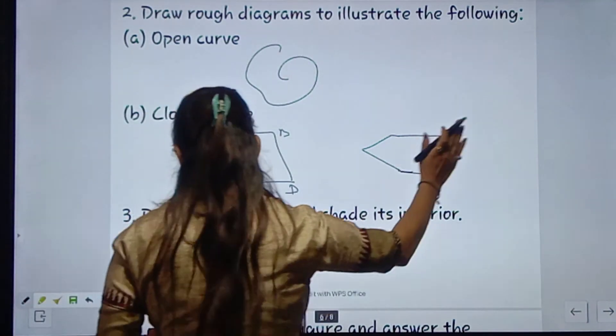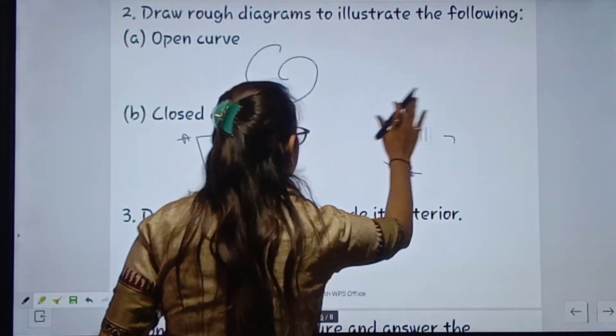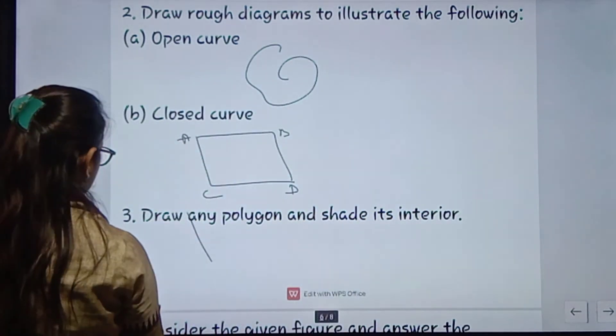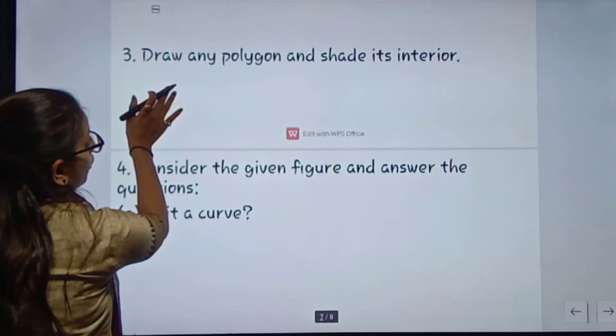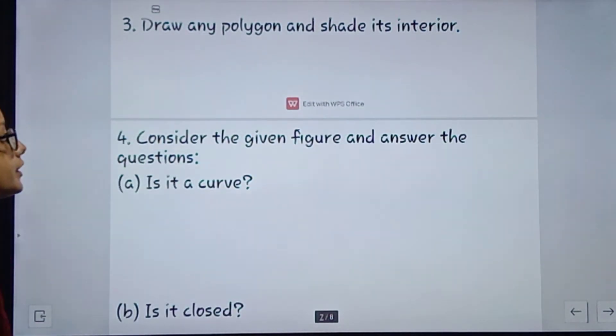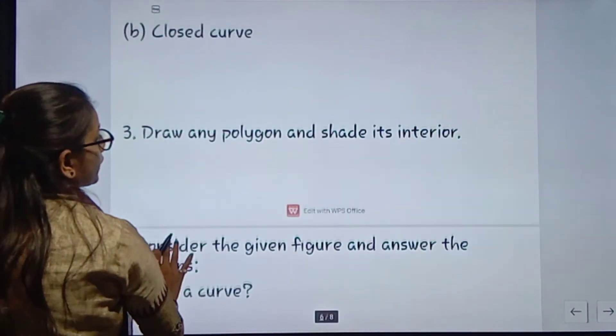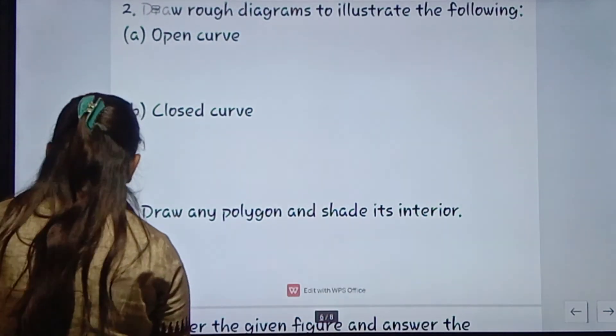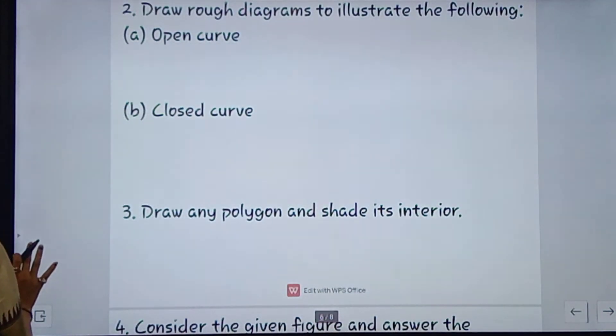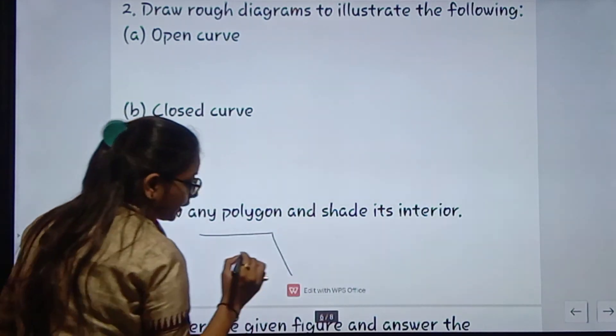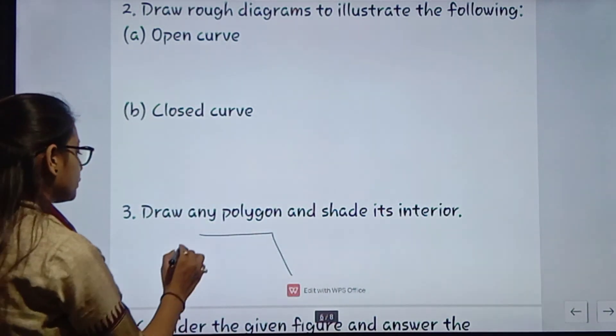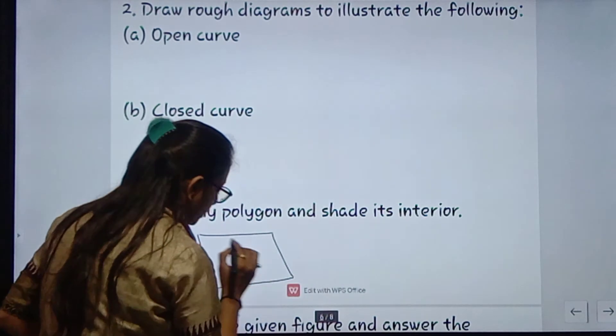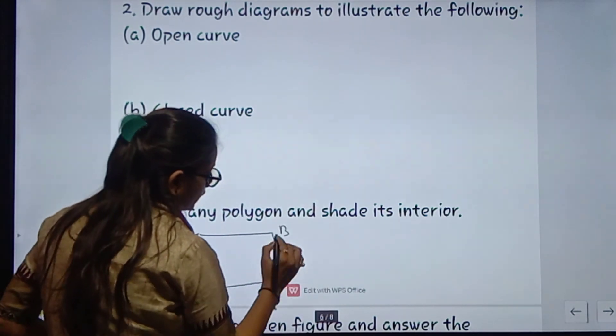Next is draw any polygon and shade its interior. Polygon ki condition kya hoti - interior jo hota hai wo line segment hota hai. To draw polygon - A, B, C, D is a polygon and shaded...